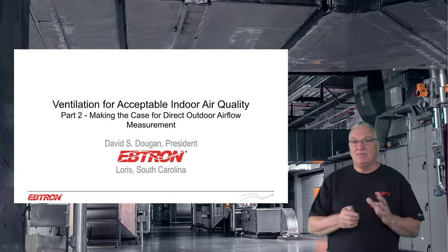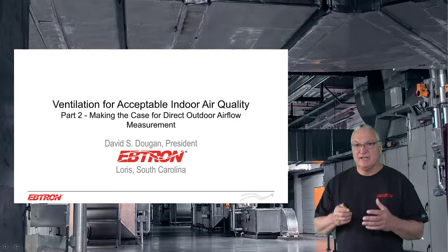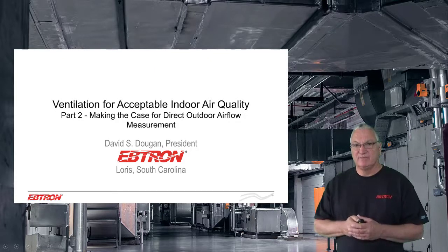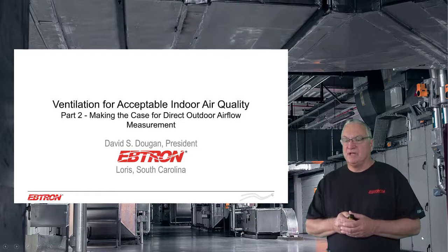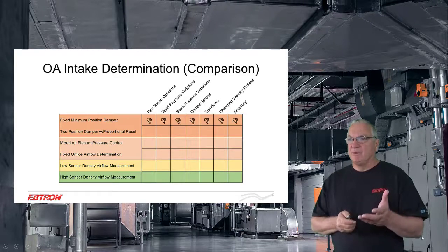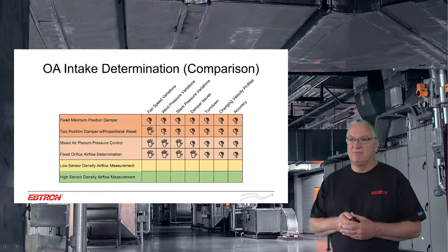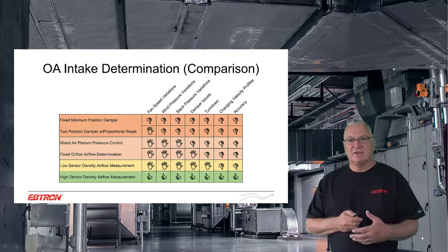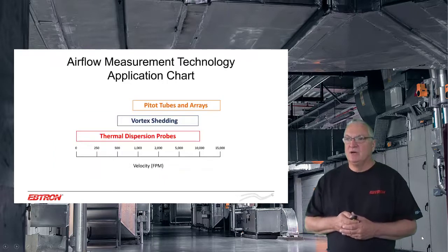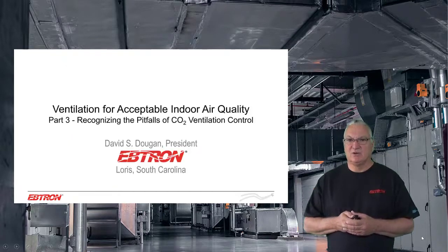In part two, part one really says we have to do something to measure and control, but not specifically direct measurement of outdoor air intake flow rates. So in part two, we're going to look at direct measurement — why is it better? We're going to compare all the different methods in some detail so that you can understand that direct airflow measurement is really what you need to do. We're going to look at the types of measurement technologies you can use, and you'll see that thermal is really where we need to be on outdoor air intakes.